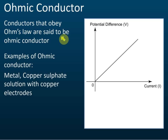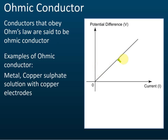Conductors that obey Ohm's law are said to be Ohmic conductors. Examples include metals and copper sulfate solution — aqueous solutions — so not necessarily only metals. If you draw the graph of potential difference against current, you get a straight line passing through the origin, which shows they are directly proportional. That straight line through the origin indicates an Ohmic conductor.